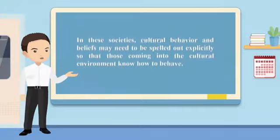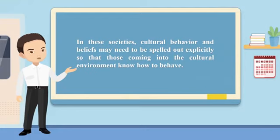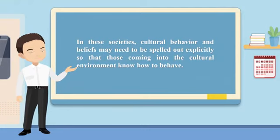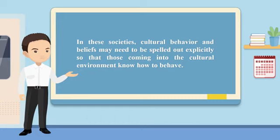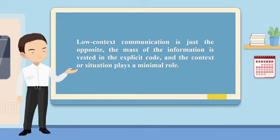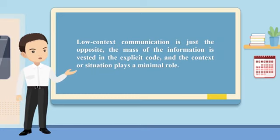In these societies, cultural behavior and beliefs may need to be spelled out explicitly so that those coming into the cultural environment know how to behave. Low context communication is just the opposite — the mass of the information is vested in the explicit code and the context or situation plays a minimum role.